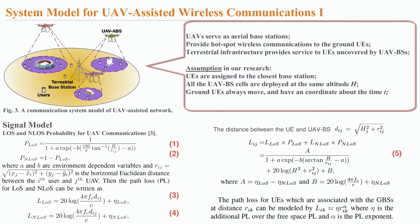Here comes Figure 3, illustrating a communication system model of a UAV-assisted network, where the UAVs serve as aerial base stations which can provide high-speed wireless communications to the ground user equipment. Also, the terrestrial infrastructure can provide service to the UEs not covered by the UAV base stations. Our research assumptions are: first, UAVs are assigned to the nearest base stations, and all UAV cells are deployed at the same altitude. In particular, ground UEs always move and therefore have coordinates that vary over time.